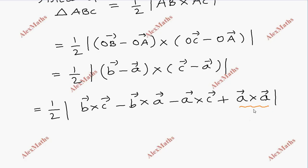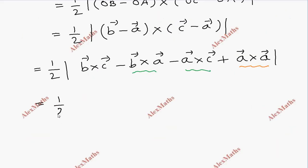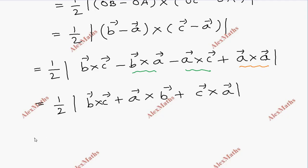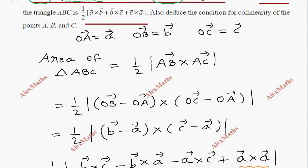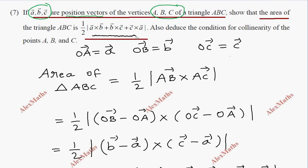Now we reverse the order for the opposite sign terms: b cross a becomes minus a cross b. So we get: half of a cross b plus b cross c plus c cross a. This completes the first part of the proof.